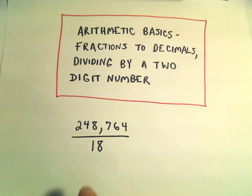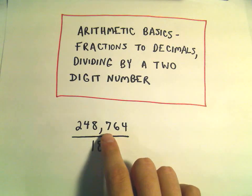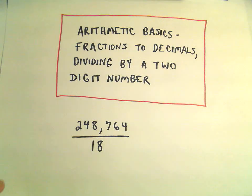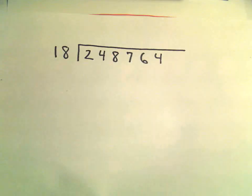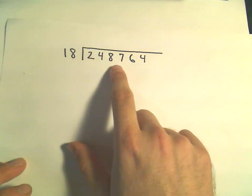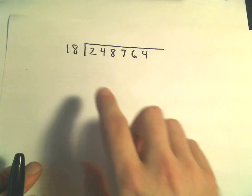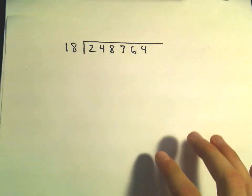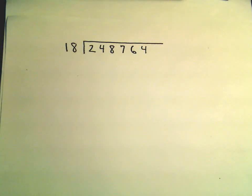So I'm going to do the example 248,764 divided by 18. And again, the first thing I do is I rewrite that. I'm going to write the 248,764 underneath and the 18 on the outside. So when I do these, I definitely do a lot of estimation to kind of help me figure out how many times, basically the numbers that go on the top.